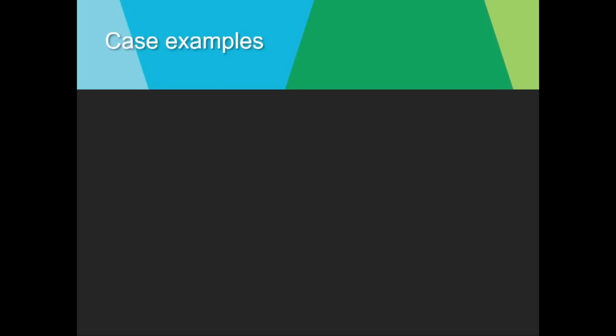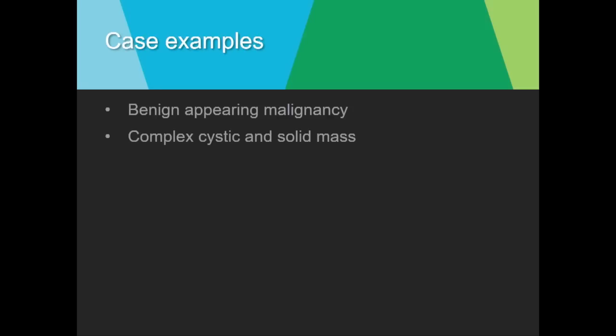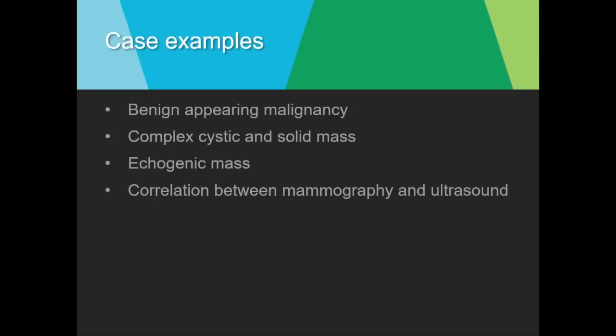I'll be showing some case examples for different types, as well as multiple companion cases for each. I'll start with a benign-appearing malignancy and go over more examples of that, as well as complex cystic and solid masses. The typically benign echogenic mass occasionally is not benign. And I'll show some cases of correlation between mammography and ultrasound.